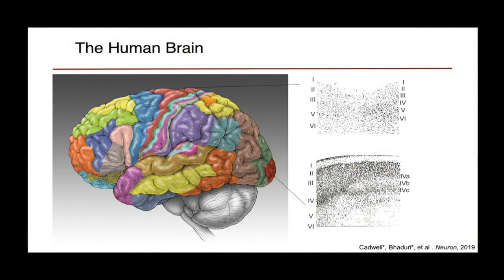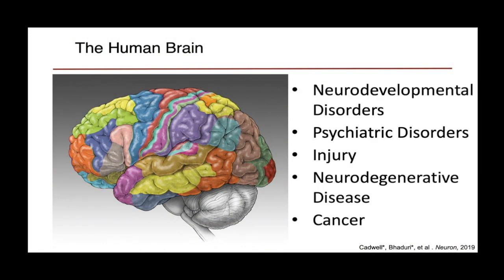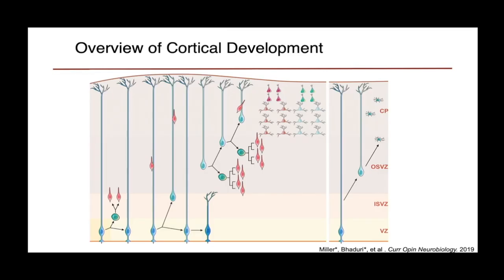Understanding how each of these areas is made and generated is really important for understanding many aspects of normal human brain function as well as diseases ranging from neurodevelopmental disorders, psychiatric disorders, as well as ways of treating injury, neurodegenerative disease, and even understanding the origins of cancer. Cortical development is a complicated and concerted process in which a originally presumptively uniform neuroepithelia gives rise to the radial glia, which are the neural stem cells of the cortex. Through intermediate progenitor cells, they give rise to the excitatory neurons, and later on in cortical development, they give rise to glia.